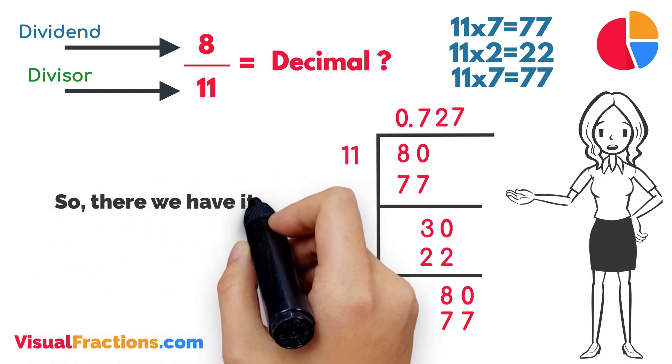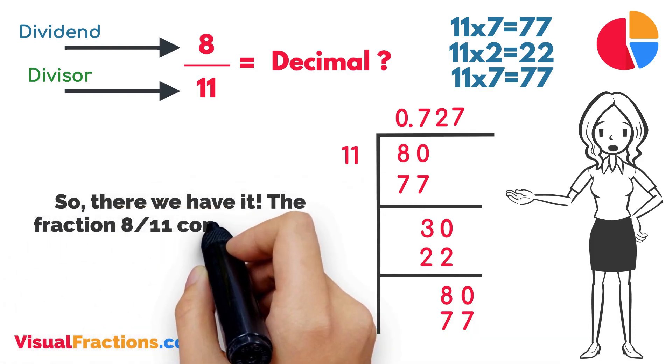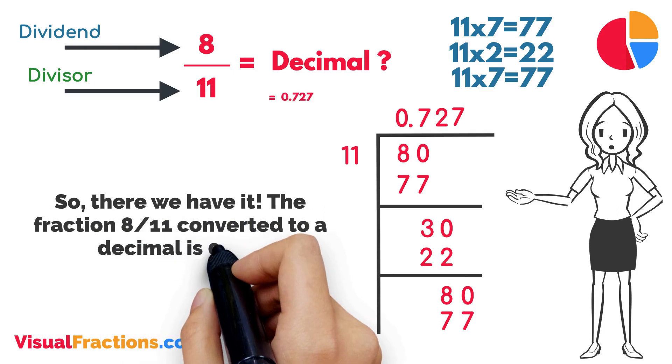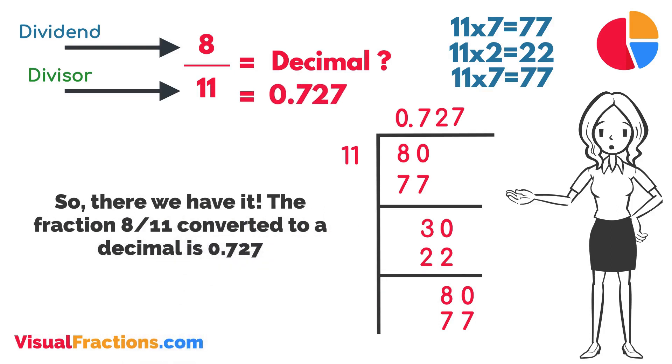So, there we have it. The fraction 8 elevenths converted to a decimal is 0.727. This conversion process shows how we can represent fractions as decimals, a valuable skill in various mathematical applications.